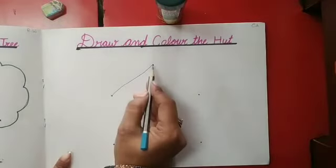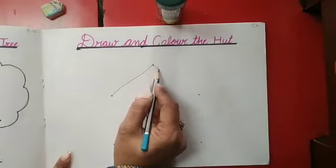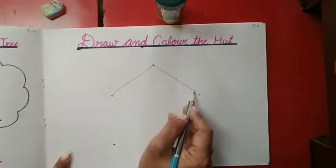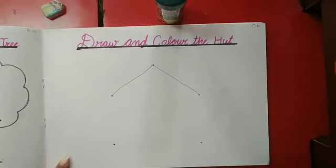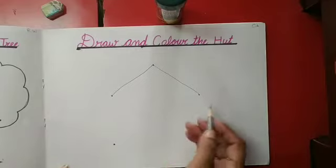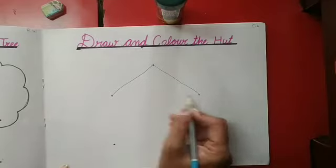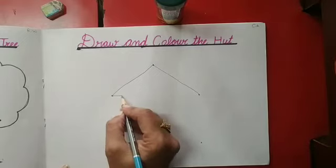Okay? Again, we will draw slanting line. Yes? Kids. Ab hum kya karengi? We will join the both line. Ab hum in donu lines ko join kar dhengi.